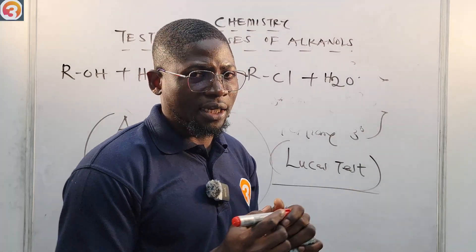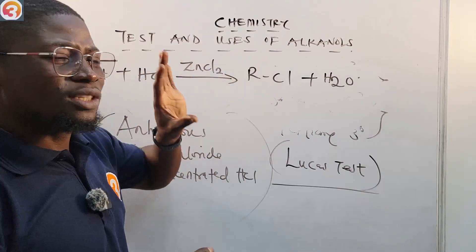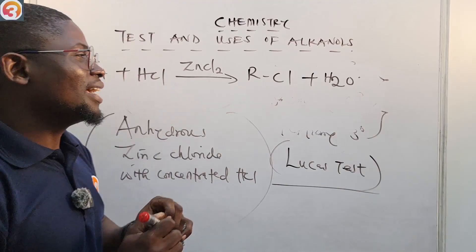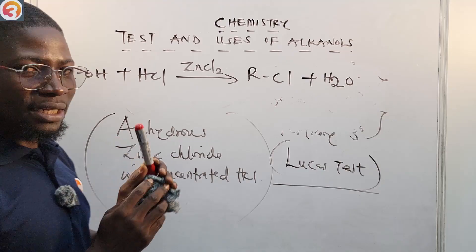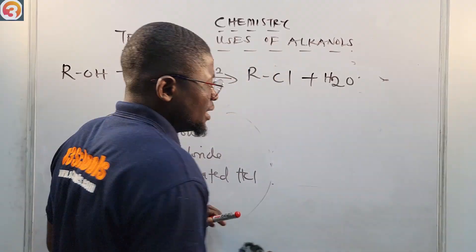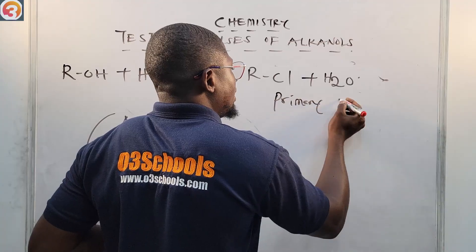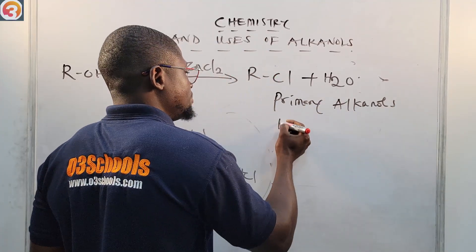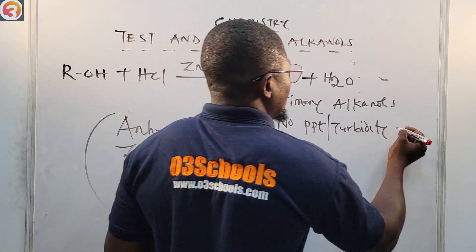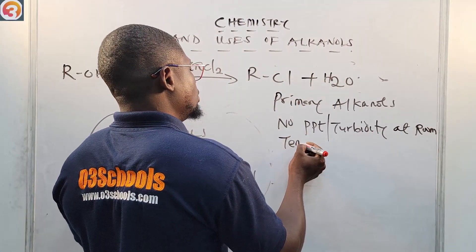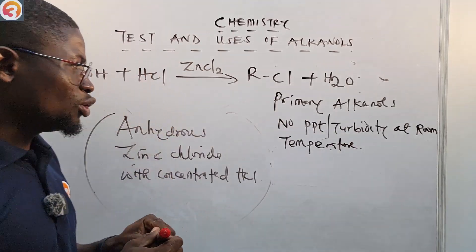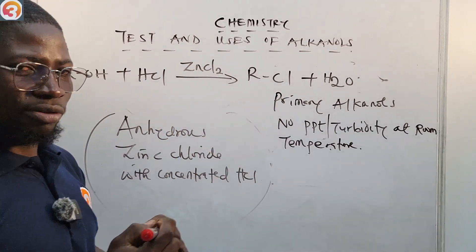Because primary alkanols do not form haloalkanes under these conditions, you do not observe any precipitate, cloudiness, or turbidity at room temperature. So for primary alkanols: no precipitate, no turbidity is observed at room temperature. We do not experience any cloudiness or turbidity for primary alkanols because they do not form haloalkanes under these conditions.